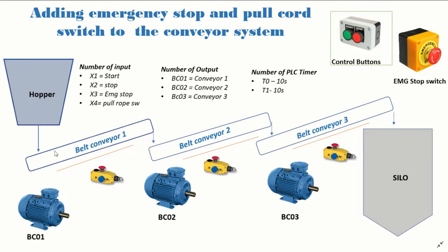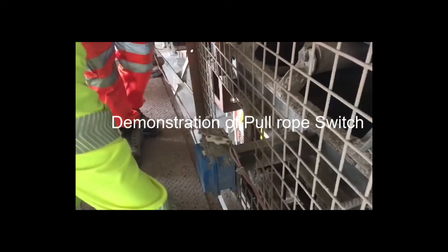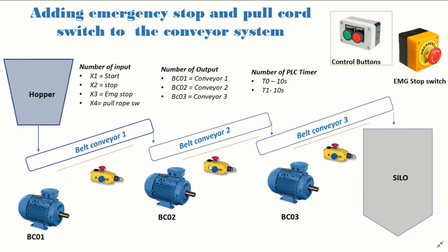Let's say for instance, whilst a technician is walking along, the conveyor is trapping them. The technician, operators, or workers should be able to stop the conveyors wherever they are to prevent injury. To do this, we have what we term the pull rope switch — we can see it in yellow right here. There is a rope connected from this hook of the pull rope switch to the other section of the conveyor so that it can be pulled whenever you want to stop it. We have three of them connected to all three parts of the conveyor; they will all be in series and given one input.